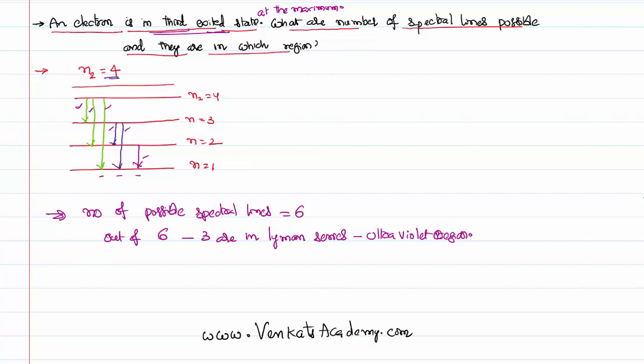We can also notice there are two spectral lines that are falling into n equal to two. Two are falling in Balmer series, and obviously they are visible.